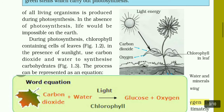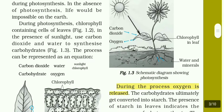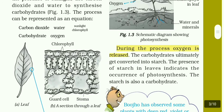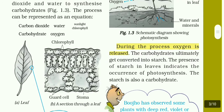Carbohydrates are the food produced — also called glucose. During the process, oxygen is released as output. The carbohydrates ultimately get converted into starch. The presence of starch in leaves indicates the occurrence of photosynthesis. Starch is also a carbohydrate.